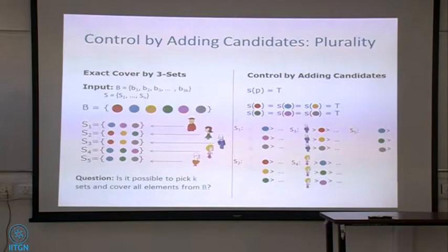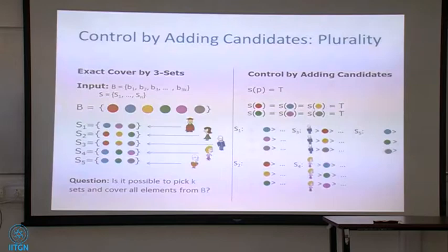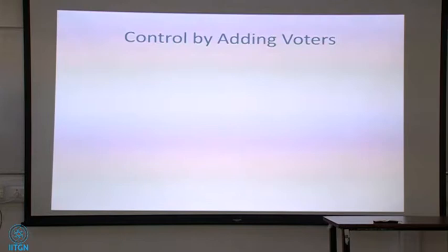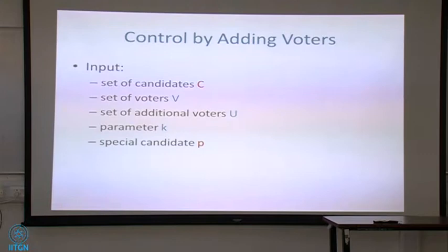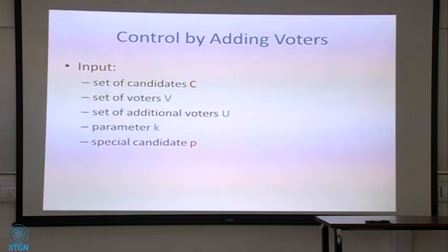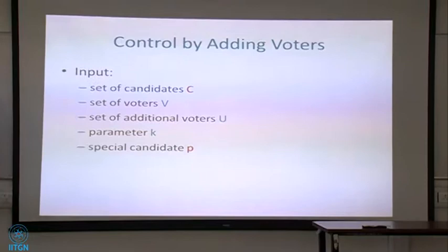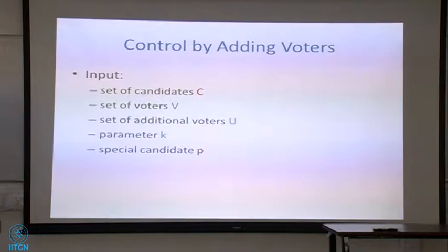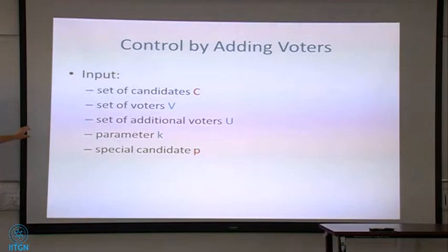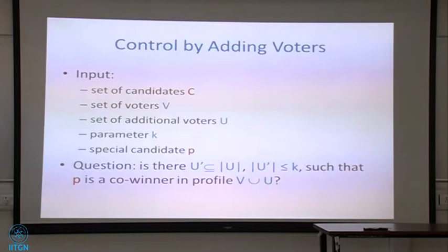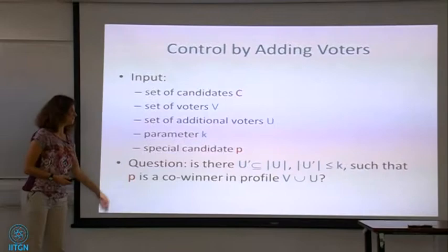Now let me talk about a different control problem: control by adding voters. Here, instead of adding candidates, we're adding voters. We have a set of candidates that we're not going to change, a set of voters V who come to the election for sure, and a set of additional voters U who may or may not show up — it's our job to recruit them. We have parameter K — only K buses to send out — so we can bring in at most K of these additional voters. Our goal is to recruit at most K additional voters to make P a co-winner.